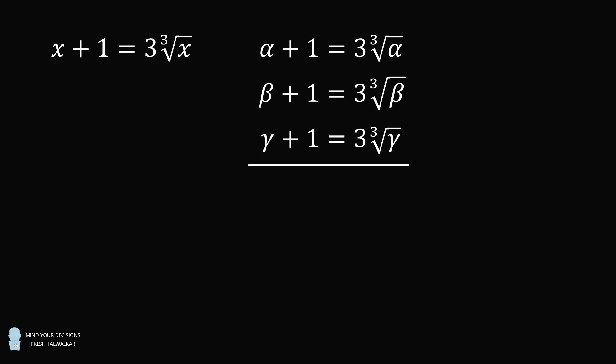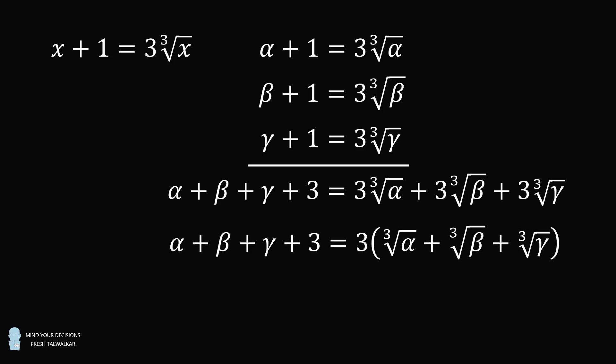Let's now sum these three equations together. We get alpha plus beta plus gamma plus 3 equals 3 times the cube root of alpha plus 3 times the cube root of beta plus 3 times the cube root of gamma. Let's factor the right-hand side, and then divide both sides by 3.